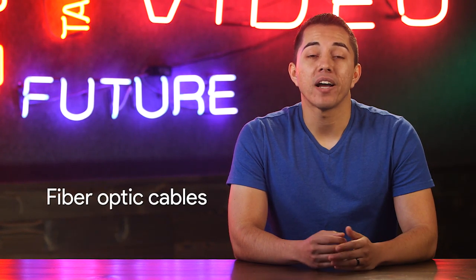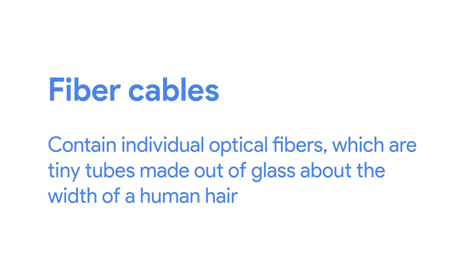The second primary form of networking cable is known as fiber, short for fiber optic cables. Fiber cables contain individual optical fibers, which are tiny tubes made out of glass about the width of a human hair. These tubes of glass can transport beams of light. Unlike copper, which uses electrical voltages, fiber cables use pulses of light to represent the ones and zeros of the underlying data. Fiber is sometimes used specifically in environments where there's a lot of electromagnetic interference from outside sources, because this can impact data being sent across copper wires. Fiber cables can generally transport data quicker than copper cables can, but they're much more expensive and fragile. Fiber can also transport data over much longer distances than copper can without suffering potential data loss.